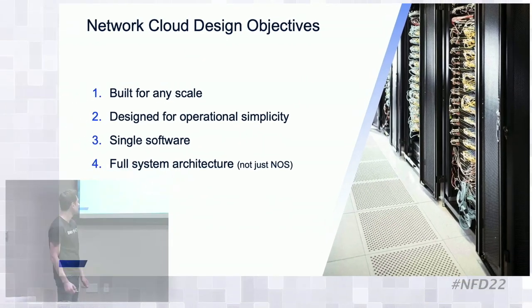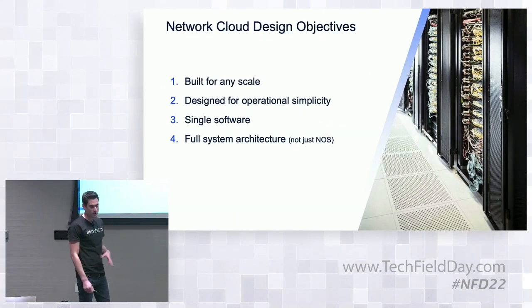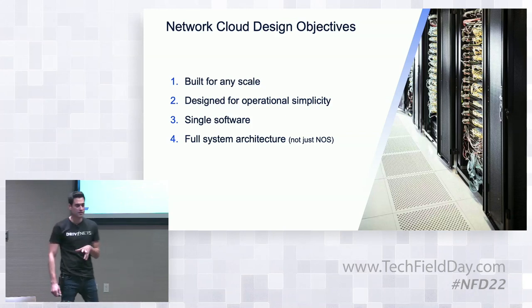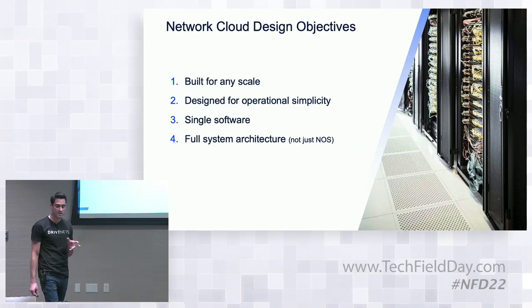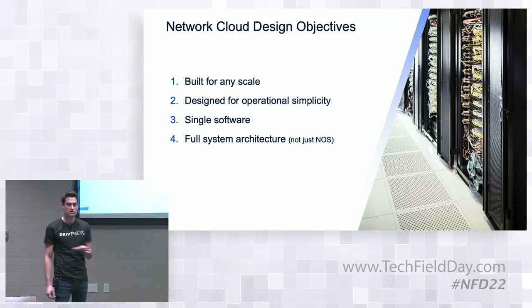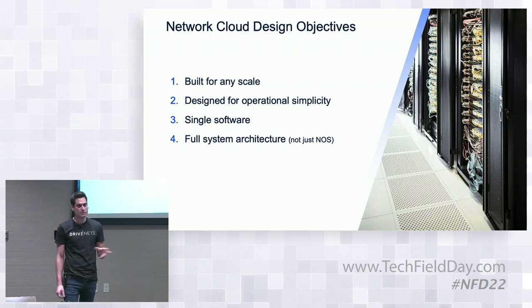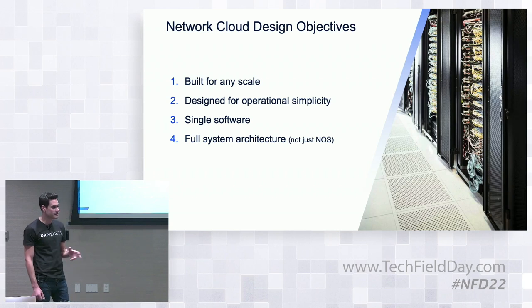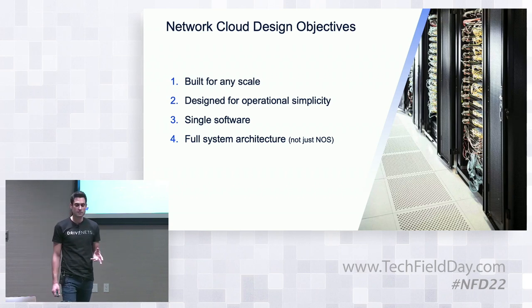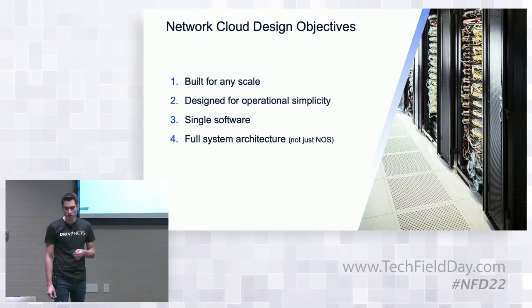When we started, we put ourselves in front of a set of goals and objectives we wanted to tackle. One is built for any scale — having the ability to have the same routing and same network operating system running on a four terabit per second standalone box and scaling out to hundreds of terabits as a single network entity. Designed for operational simplicity: once the cluster is provisioned, it acts like a big chassis.